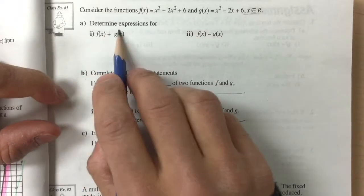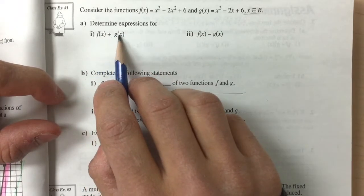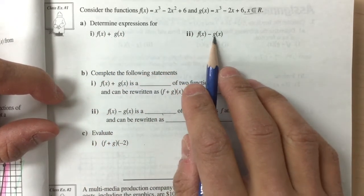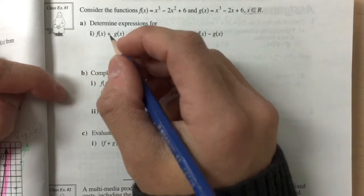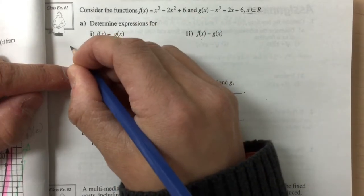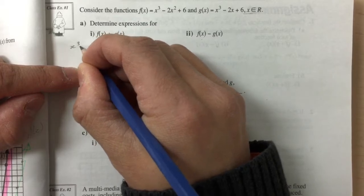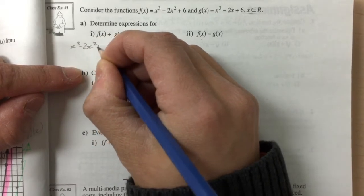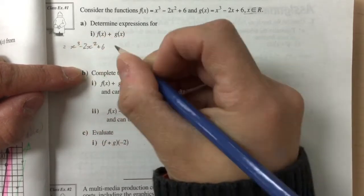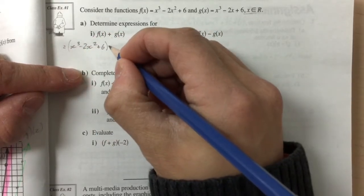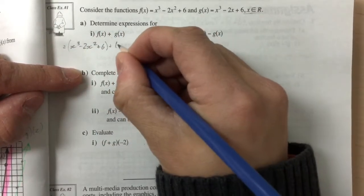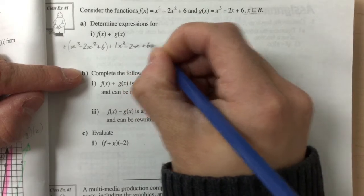And so we want to determine the expressions for f of x plus g of x and f of x minus g of x. So first of all, f of x, function f of x is equal to x cubed minus 2x squared plus 6, and I want to add my function g of x, which is x cubed minus 2x plus 6.